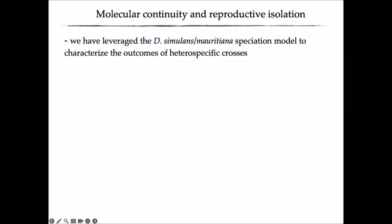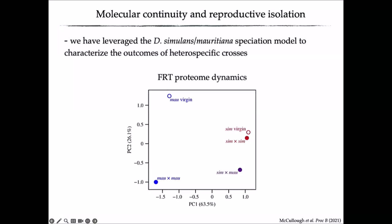For this audience, I should note that we've been able to do all these experiments in the simulans and morishiana speciation model system. Morishiana and simulans are very closely related, having diverged about 250,000 years ago. We already know there's post-mating prezygotic (PMPZ) reproductive isolation, allowing us to do conspecific crosses and repeat experiments described earlier, and also heterospecific matings to look at how these mechanisms may become dysregulated or 'break down' in a heterospecific cross.